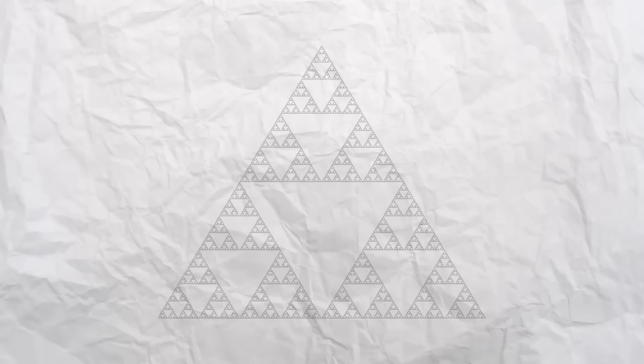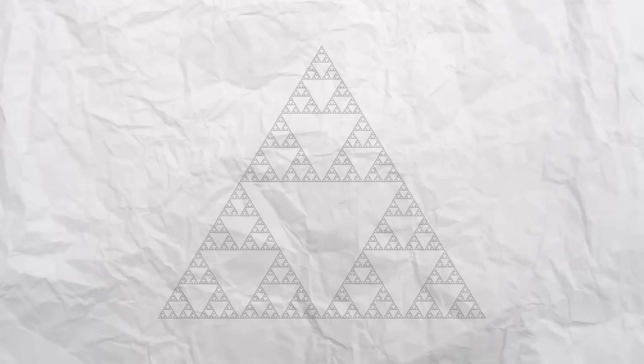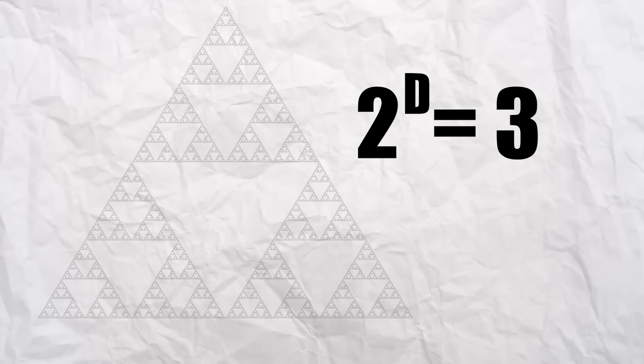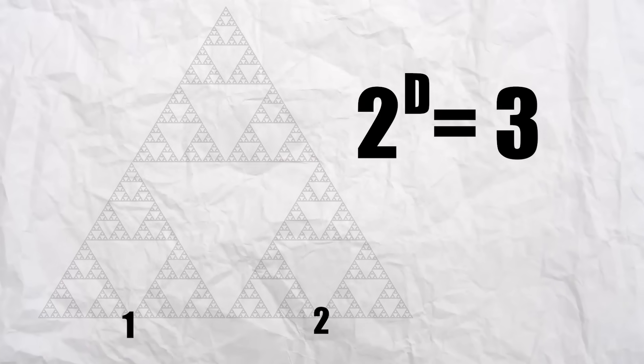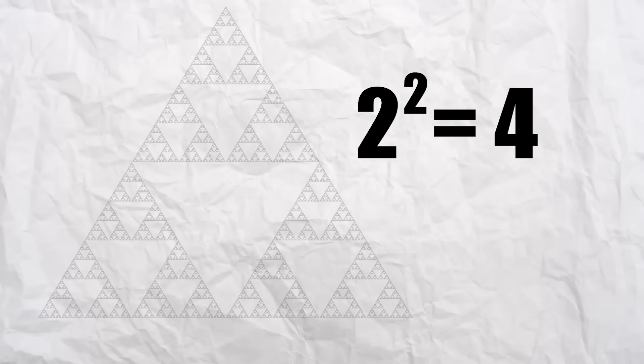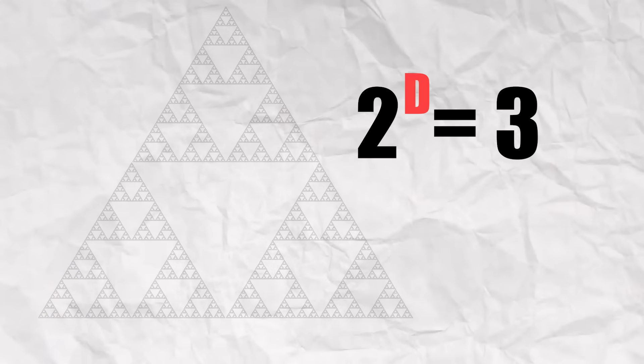But what about a fractal? Well, consider Sierpinski's triangle, an equilateral triangle with a gap of a triangle repeated infinitely. To double its size, we require two extra copies, or three total copies. This is still the same shape, just scaled by a factor of two. But hang on, if I put two to the power of two, I get four. But all I need is three copies. So what's the dimension?